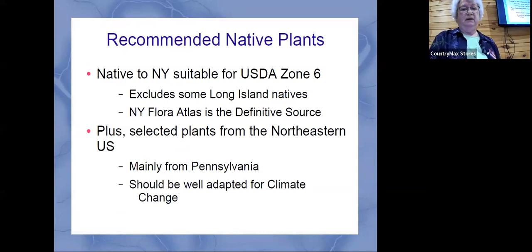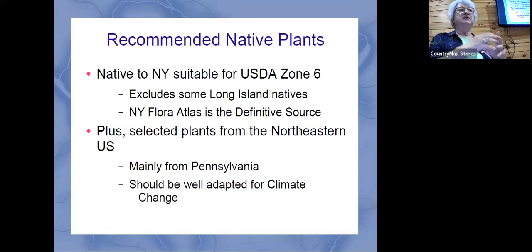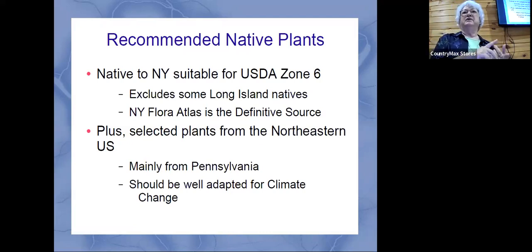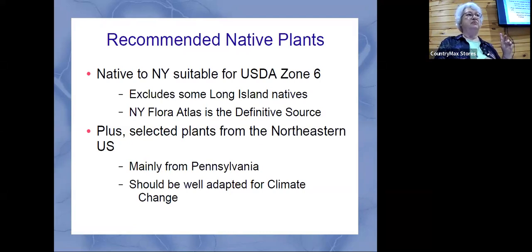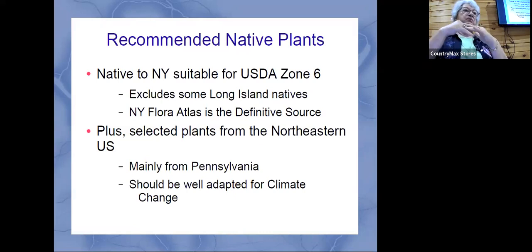We are zone six. As we go through the talk and see different conditions, this information you can usually get on a plant tag, which typically tells you if it's a perennial or annual, what kind of light it needs, what kind of water, how big it gets, and the zone. If you plant a perennial and want it to come back every year, you have to make sure it's viable in our zone. The bigger the numbers, the warmer it gets — going down into Maryland and Virginia you start getting into zones seven, eight, nine.